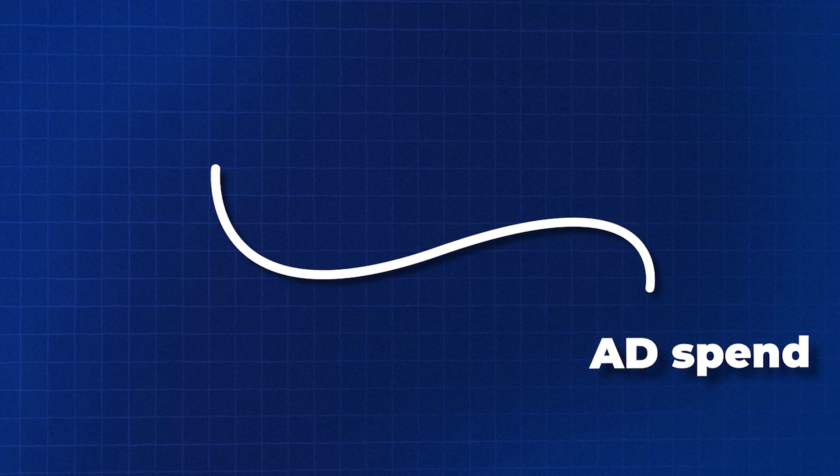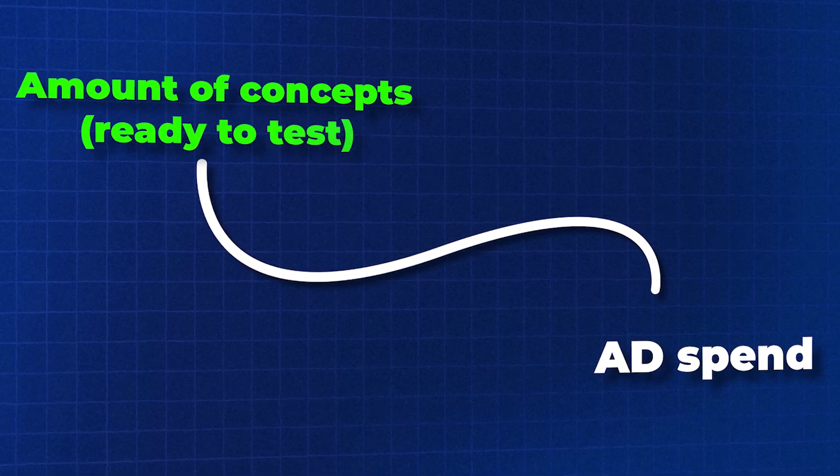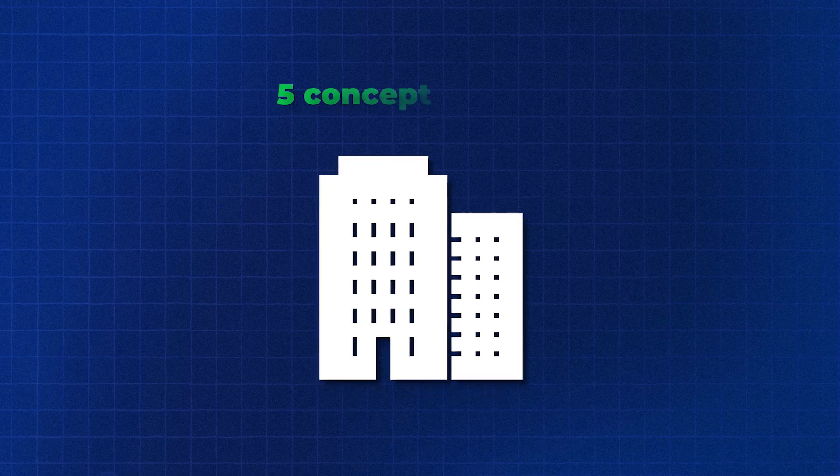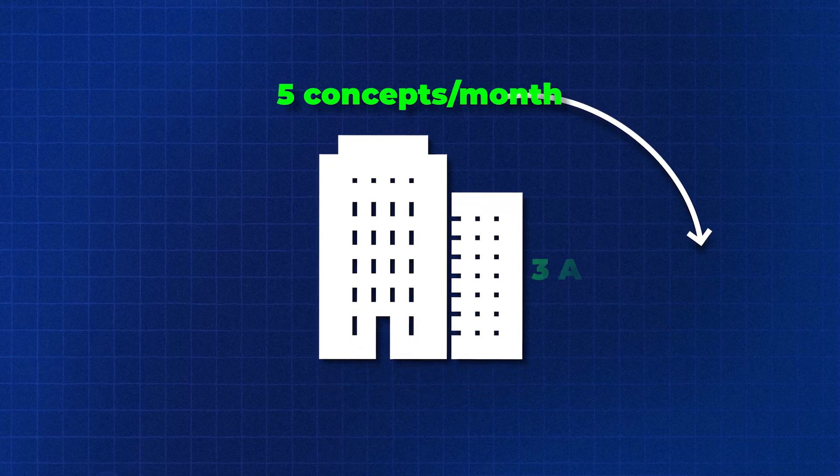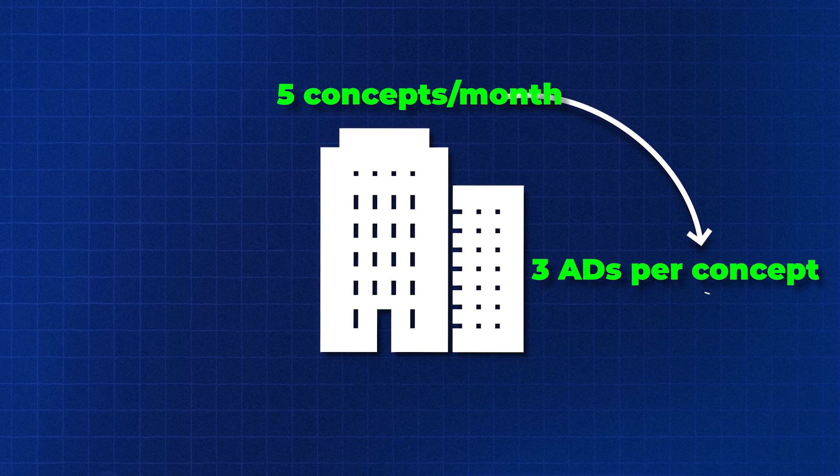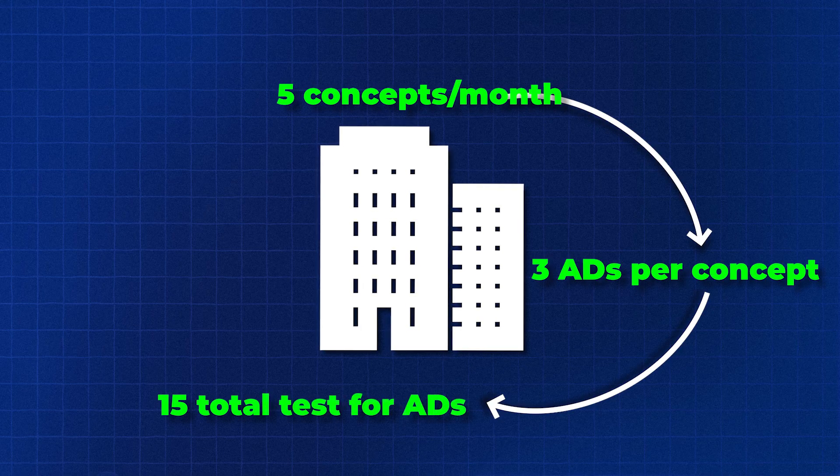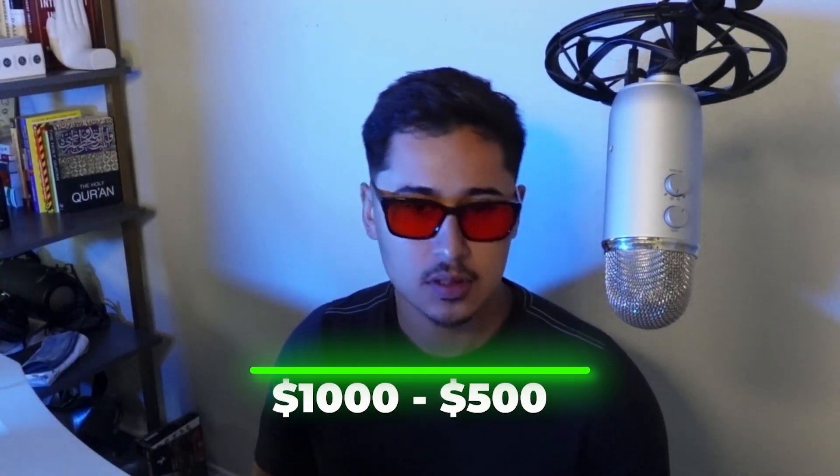First things first, our ad spend is directly correlated to the amount of concepts we have ready to test. So if I have one brand, we're only doing five concepts a month. Let's say it's three total ads per concept. I'm doing 15 total testable ads.